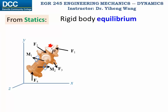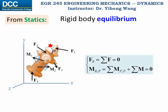If you recall from statics, we learned the rigid body equilibrium conditions: if this rigid body is subjected to multiple external forces and couple moments, for it to be in equilibrium — not translationally, not rotationally — the resultant external forces acting on it must be zero in vector form, and the resultant moments of all external forces and couple moments summarized about an arbitrary point P must also be zero. The resultant moment about point P includes not only moments caused by forces, but also all the couple moments.